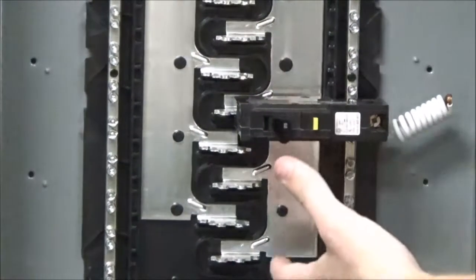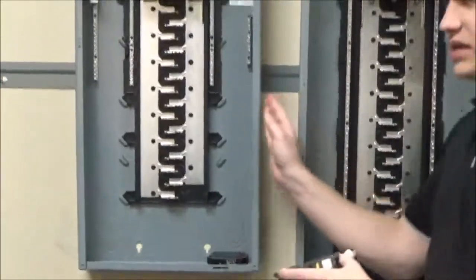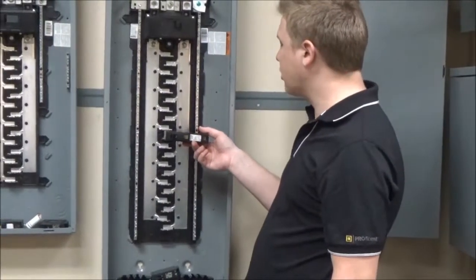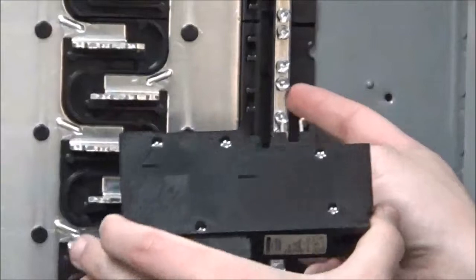Now the plug-on neutral breaker you would install by sliding this clip onto the space in the neutral bar and rocking forward into place.